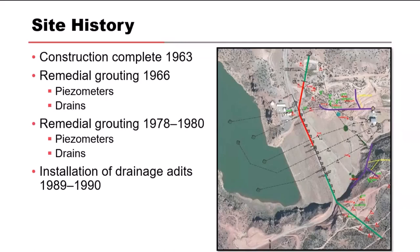Construction of Abiquiu Dam was completed in 1963. Since water was first impounded, the dam has had a history of excessive seepage through the fractured sandstone abutments. Remedial modifications were conducted in the 60s, 70s, and 90s to reduce or control the seepage. The most significant modifications included a remedial grouting program in 1966, shown in red, and then more remedial grouting in the late 70s through 1980, shown in green.